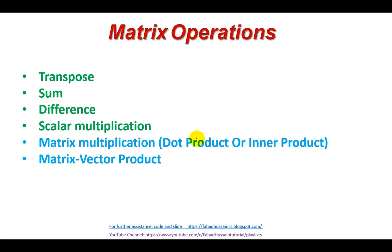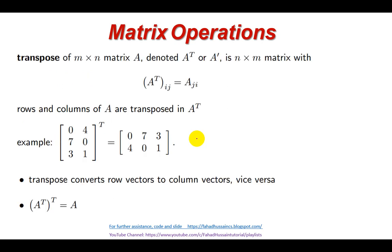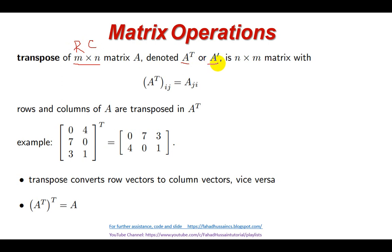Let's start. First of all, we have to understand transpose. As we learned in the previous session, a matrix is an arrangement of rows and columns with a collection of numbers. Transpose means that if you have a matrix which is M by N — meaning it has M rows and N columns — and if we represent the transpose of matrix A as A^T, then we are transposing the matrix.